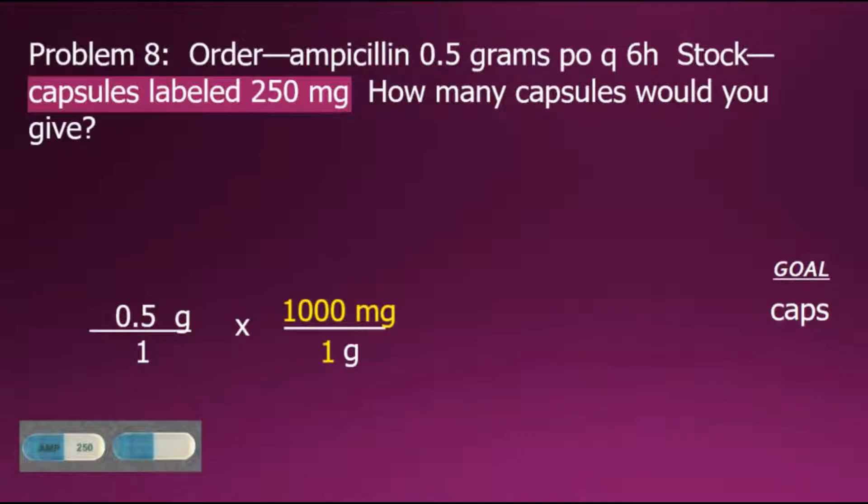When multiplying, if we have a common factor in the numerator and denominator, we can cancel them out since grams divided by grams equals 1. We now have our order in milligrams.